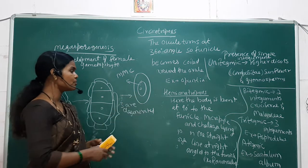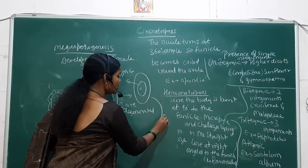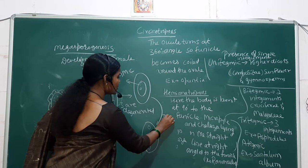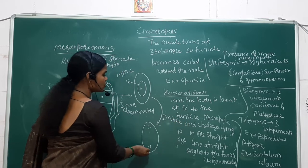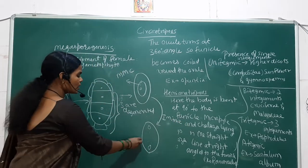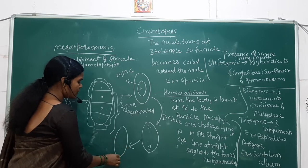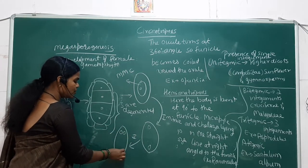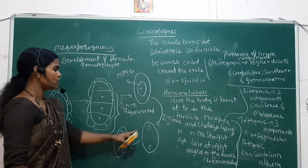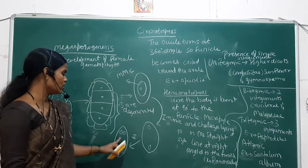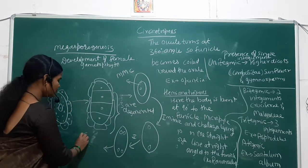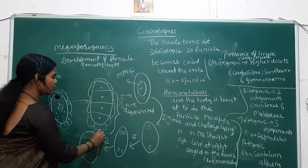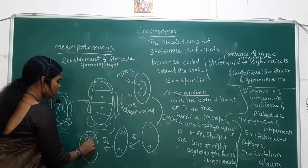The single megaspore mother cell undergoes a series of three mitotic cell divisions. The first mitotic division produces two daughter cells. The second mitotic division produces four daughter cells. The third mitotic division produces eight daughter cells.